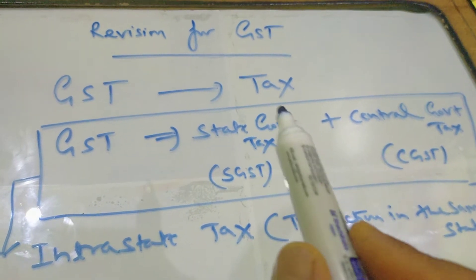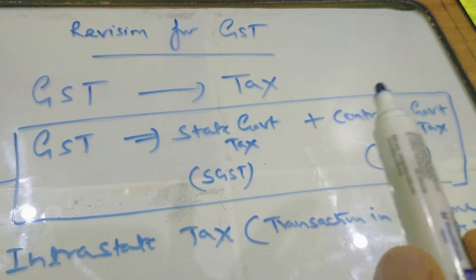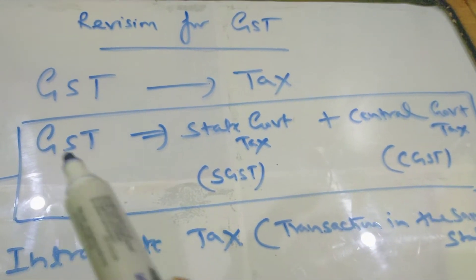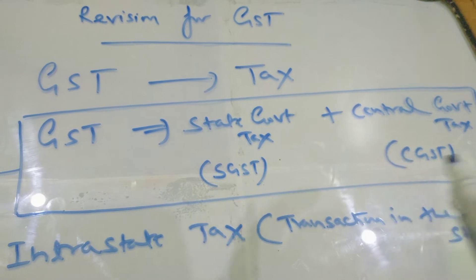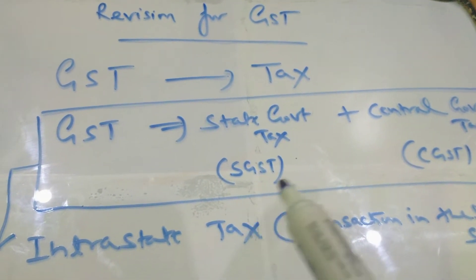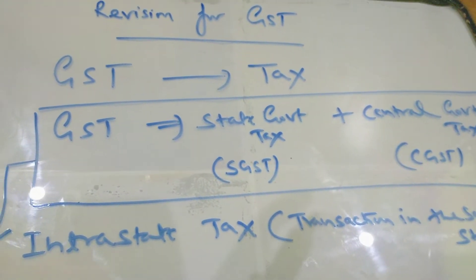One tax has to go to the state government and another tax has to go to the central government. If you say GST, it means state government tax plus central government tax. If you say SGST only, it means only state tax. If you say only CGST, it means only central government tax.